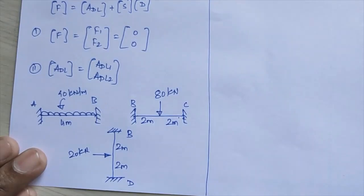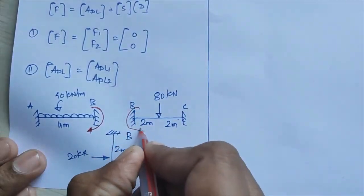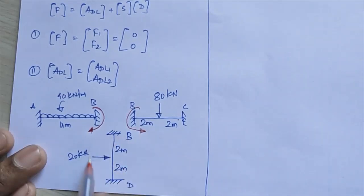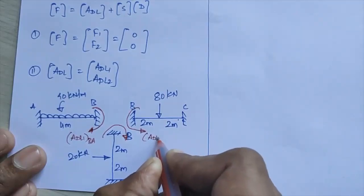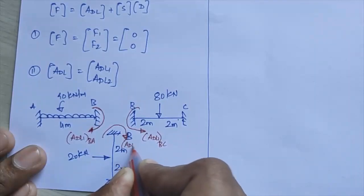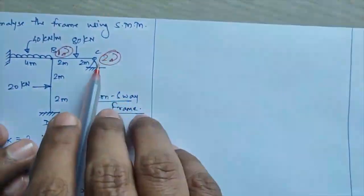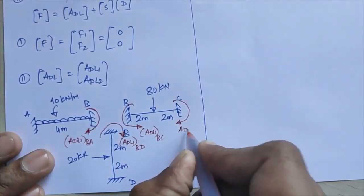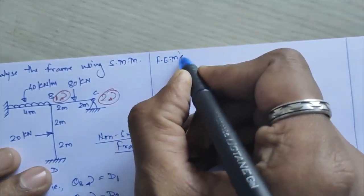The restoring moment for BA will be clockwise, for BC it will be anticlockwise, and for BD — the 20 kN force introduces an anticlockwise moment, so its restoring moment will be clockwise. ADL1 covers members BA, BC, and BD. For ADL2 at the second coordinate, only one member CB is present, with a clockwise restoring moment.